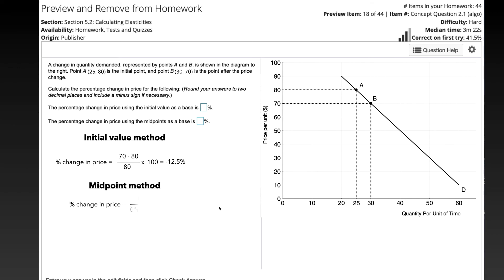If we go to the midpoint method, you can see that the denominator is now different. Before we just had P1 in the denominator, now we're taking P1, adding P2, and dividing by 2. So we're using the point halfway between points A and B to calculate this percent change in the price.